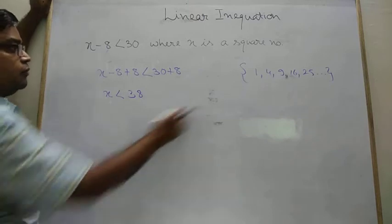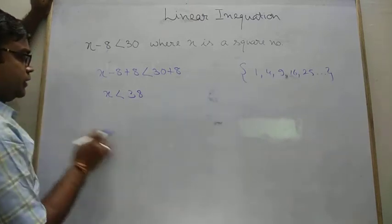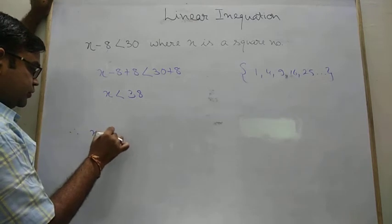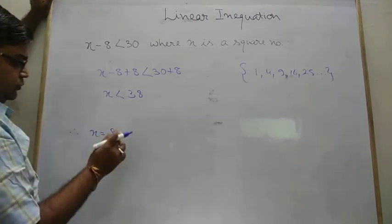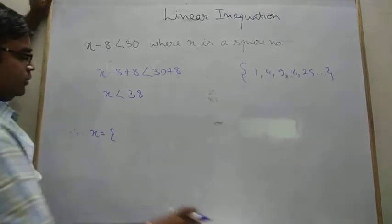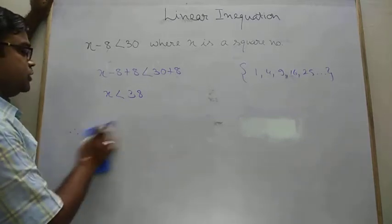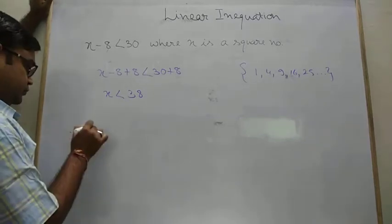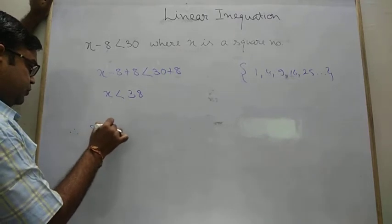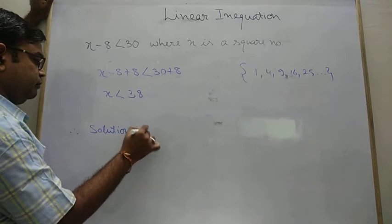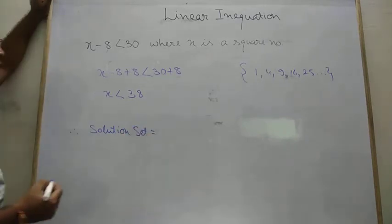So what is the solution set? As we know that this is a reference set. So therefore you can write down x must be equals to. Or you can say x belongs to. Either you can write down x equals to x belongs to. Or you can write down simply solution set. Whatever you wish you can write down. But remember meaning must be solution set is.